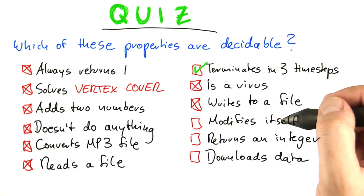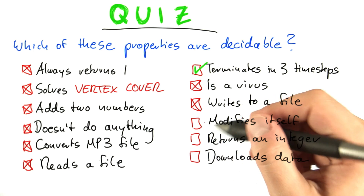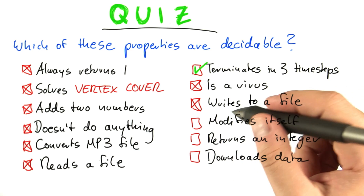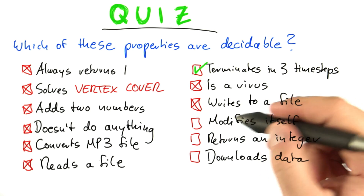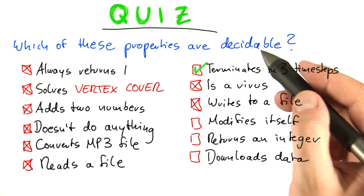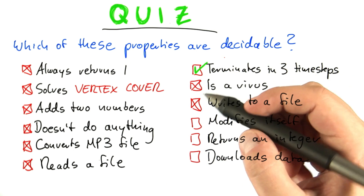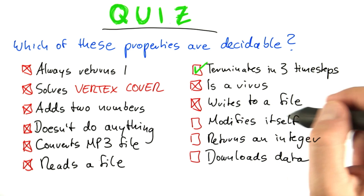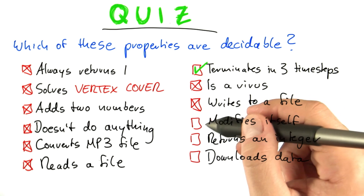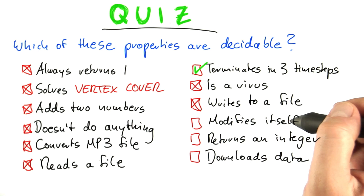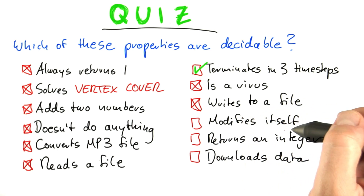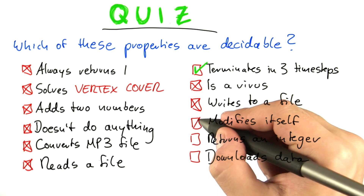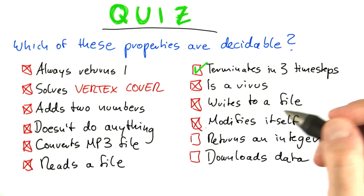'Modifies itself' — that is an interesting one. You could say you can just go through the code, and whenever the program accesses itself, you know it has that property. But the program could have certain lines that suggest it modifies itself. Deciding whether those lines will actually be reached once the program executes would again allow you to solve the halting problem. So this also isn't decidable.